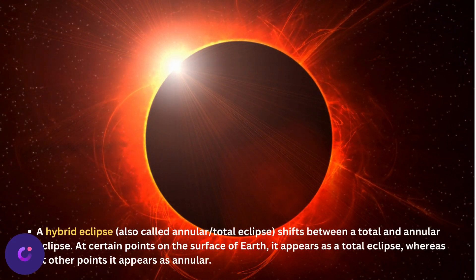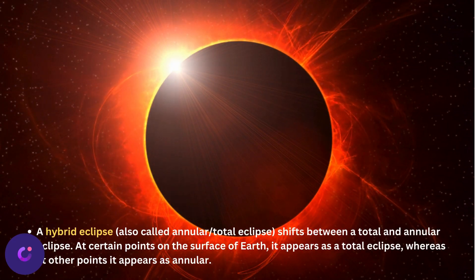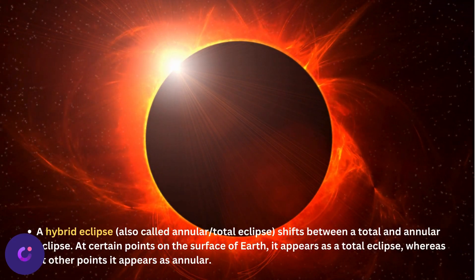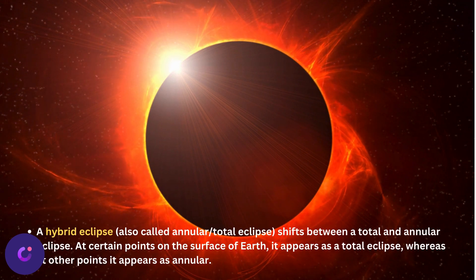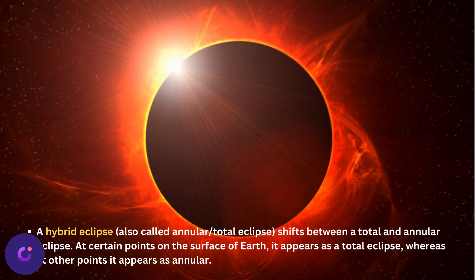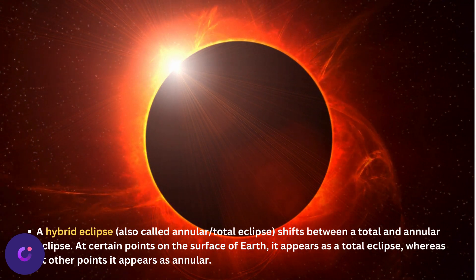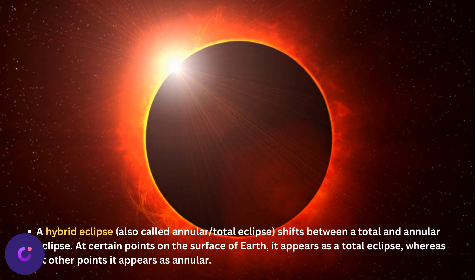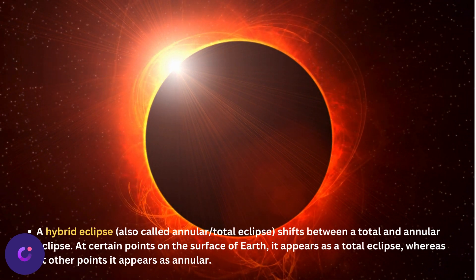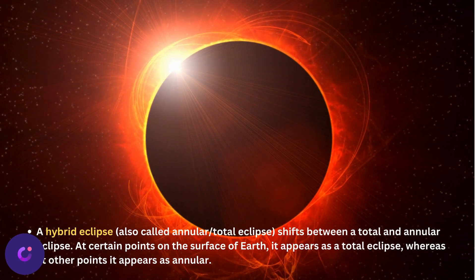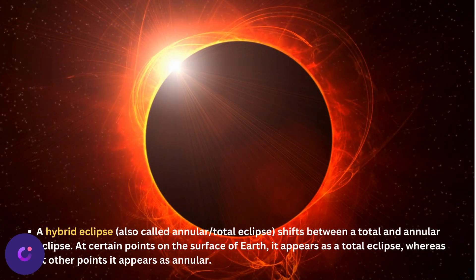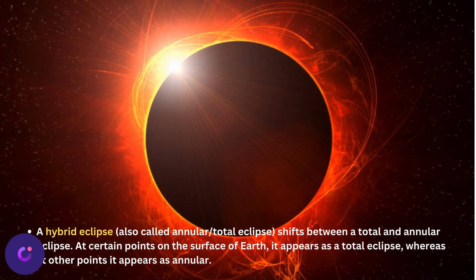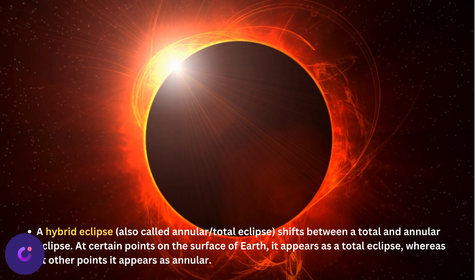A hybrid eclipse, also called an annular-total eclipse, shifts between a total and annular eclipse at different points on the surface of earth. At some points it appears as a total eclipse, and at other points it appears as annular.